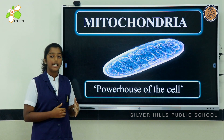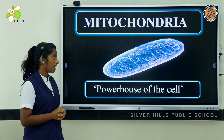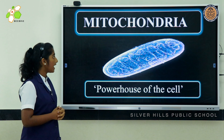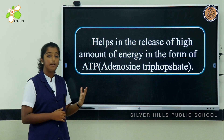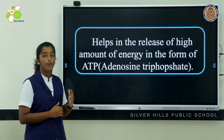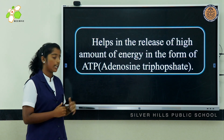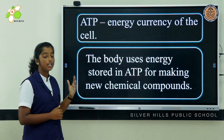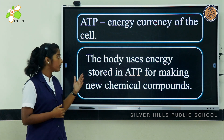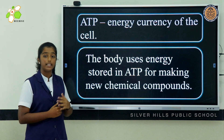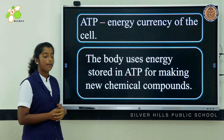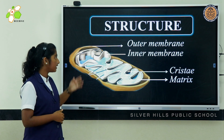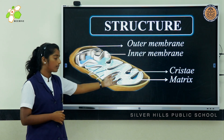Moving on to the next cell organelle, that is mitochondria. Mitochondria is known as the powerhouse of the cell, as they help in the release of a high amount of energy in the form of ATP — that is, adenosine triphosphate. ATP is known as the energy currency of the cell, and our body uses the energy stored in ATP for making new chemical compounds. Now let's see the structure: there is an outer membrane, inner membrane, cristae, and matrix.